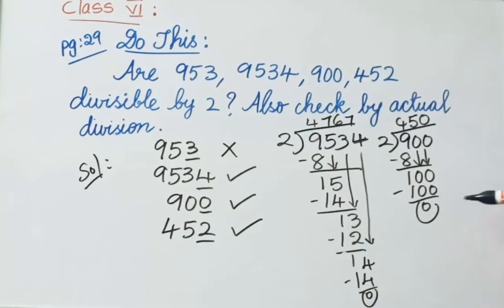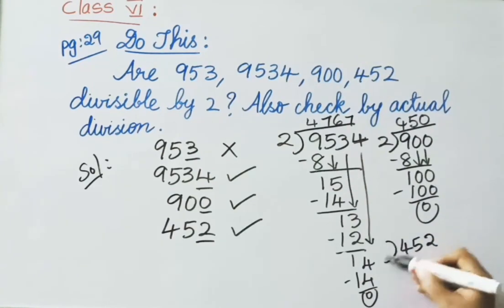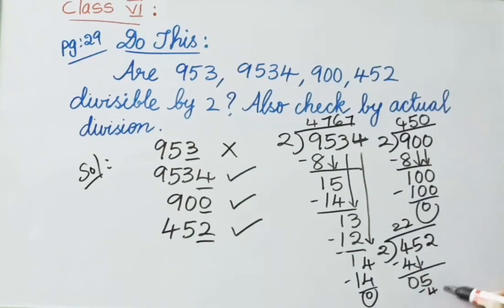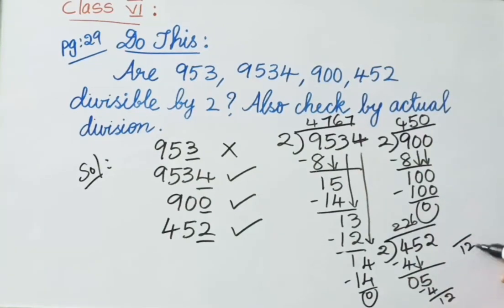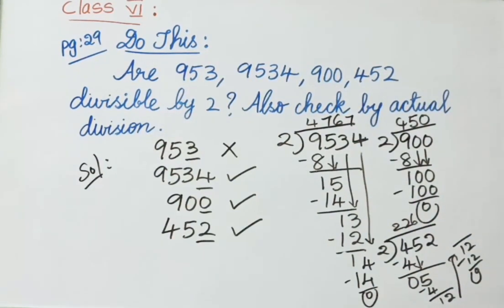Now check 452 divided by 2: working through the division, we get a remainder of 0. So 452 is also divisible by 2. So what we have done here — without doing the division we verified whether the given numbers are divisible by 2 or not, and then re-verified by doing the actual division.